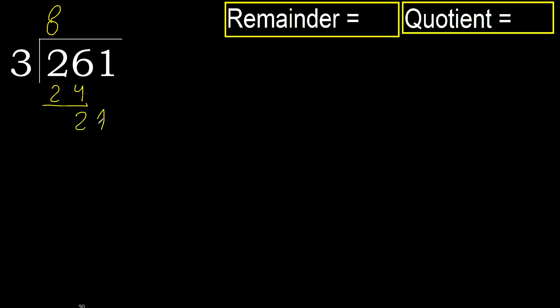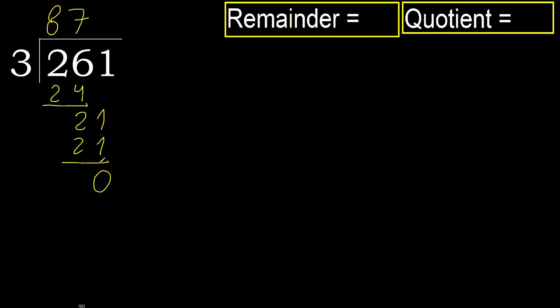Next, bring down 1 to get 21. 3 multiplied by 7 is 21 — 21 is not greater. Subtract: remainder is 0. Next: there is no more digit, therefore finish.